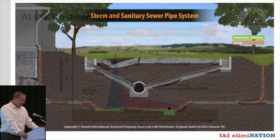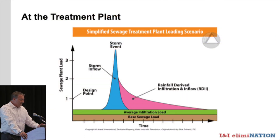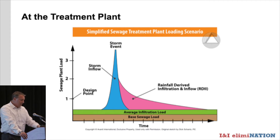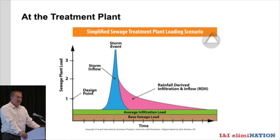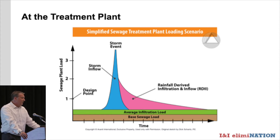There's going to be siphoning of fines that come in and create voids around those pipes, creating a destructive effect. At the treatment plant, Jim had some great graphical representations of what those loads look like. This shows a storm event that comes in and peaks — it has average load on the base, but it's the rainfall-derived infiltration and inflow that will have a dramatic impact on water treatment plants.